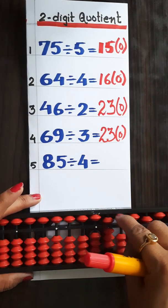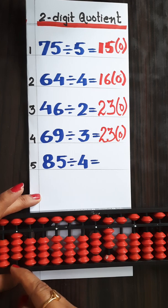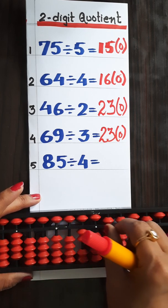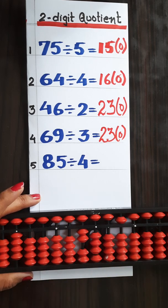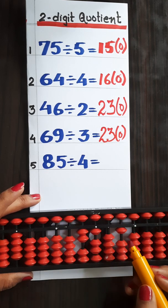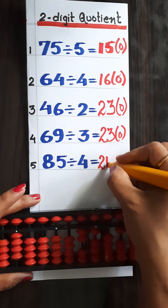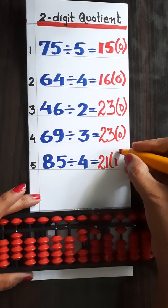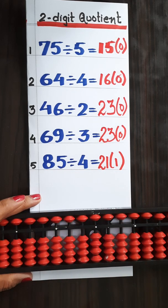Now 85 divided by 4. Again for 8, we read the table of 4: 4 twos are 8. Now 5 is there and we have 4 — we cannot do 4 twos, so we have to do 4 ones are 4, with 5 going and 1 coming. In this question we are getting a remainder. The answer is 21 and we got 1 as remainder, so we write 1 in the bracket. Do all these questions 2 times to have a better understanding. Thank you so much.